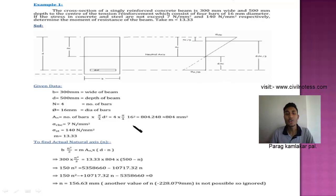Now coming toward the determination of the neutral axis. First of all you have to determine the neutral axis of the particular beam. It can be calculated by this formula: B into N square upon 2 equals to M into AST multiplied by D minus N. You have to put all values: 300 multiplied by N square by 2 equals to 13.33 multiplied by 804 multiplied by 500 minus N.